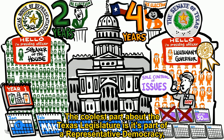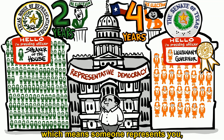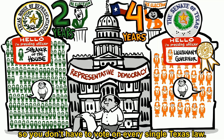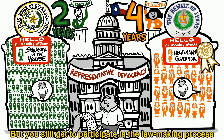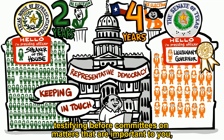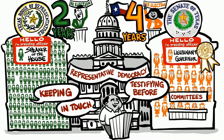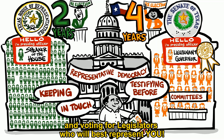The Texas legislature is part of a representative democracy, which means someone represents you so you don't have to vote on every single Texas law. But you still get to participate in the lawmaking process by keeping in touch with your legislators, testifying before committees on matters that are important to you, and voting for legislators who will best represent you.